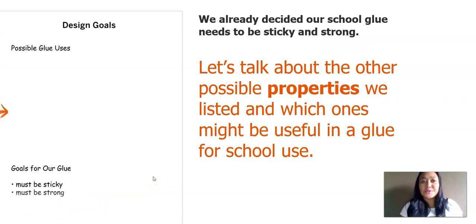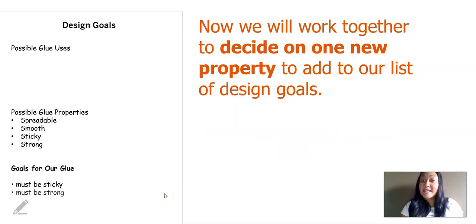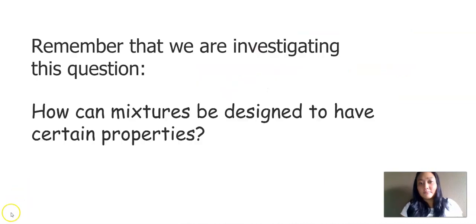We're also going to take a look back at this design goal poster that we've made. We already decided that our school glue needs to be sticky and strong. Let's talk about the other possible properties we listed and which ones might be useful in a glue for school use. The possible glue properties are: spreadable, smooth, sticky, and strong. Now we will work together to decide on one new property to add to our list of design goals. Remember, we already have sticky and strong — what goal might we add?